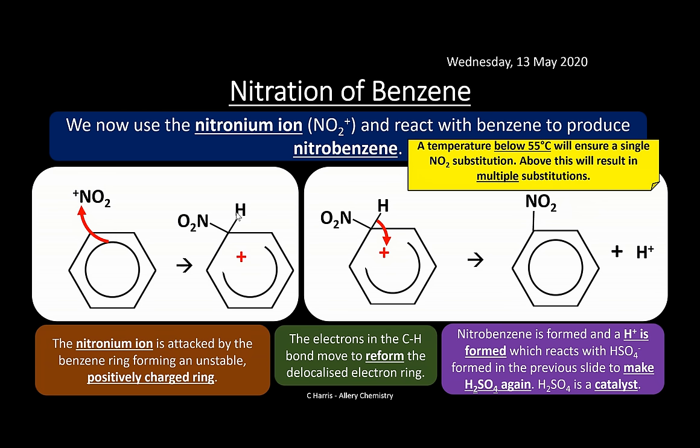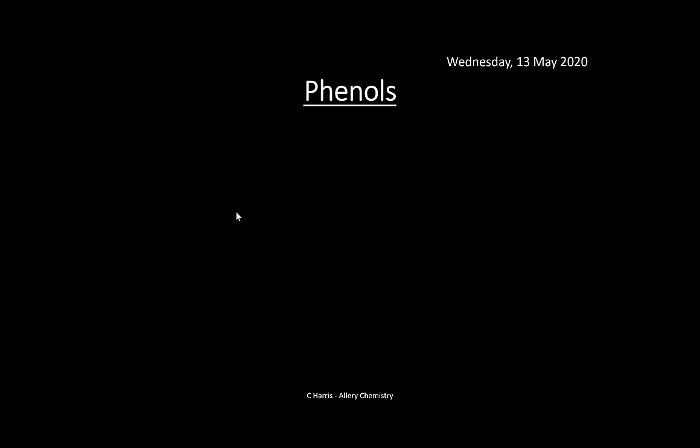The reaction must be carried out at a temperature below 55°C to ensure only a single NO₂ substitution. Anything above this gives multiple substitutions at different positions on the benzene ring. Normally, the beaker is placed in an ice bath to ensure the temperature never exceeds 55°C, as this reaction generates quite a lot of heat very quickly.